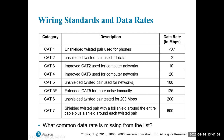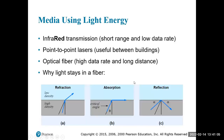Cat 5E, 6, and 7 with those advancements can go from a gigabit all the way to 10 gigabits with the right interfaces.